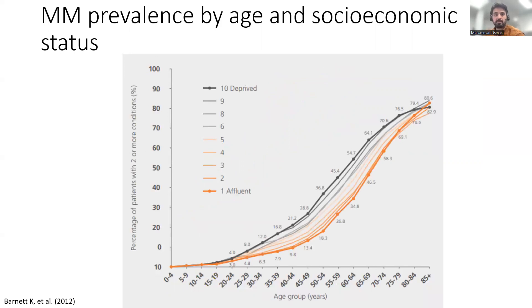Another graph shows multimorbidity prevalence by age and socioeconomic status. A socioeconomic status scale of one represents the most affluent and ten represents the most deprived. This data has been taken from cross-sectional studies using complete clinical data for all patients registered in 314 primary care practices around Scotland.